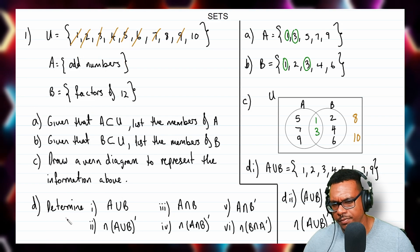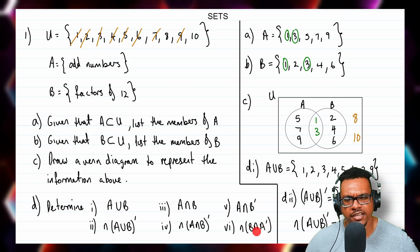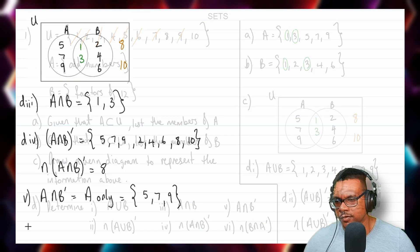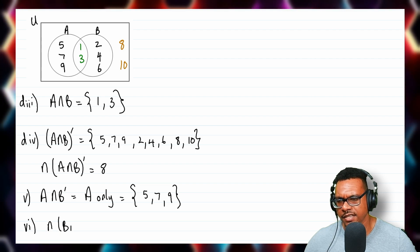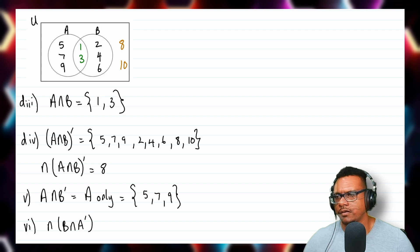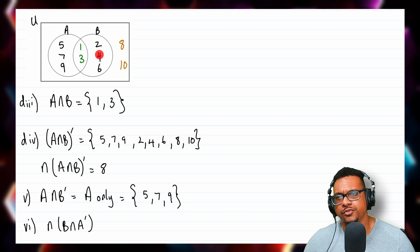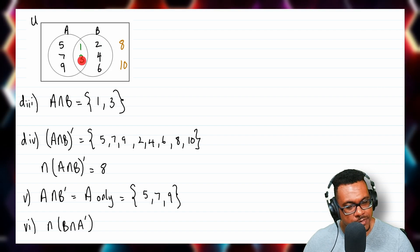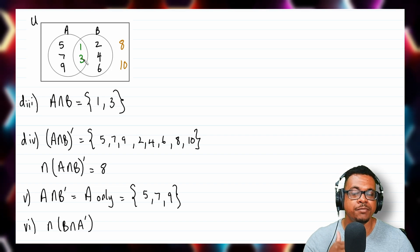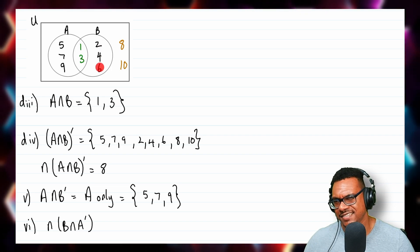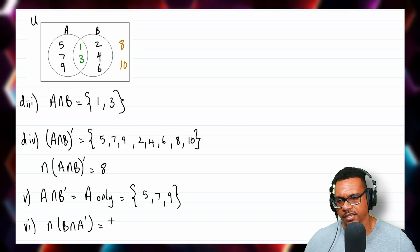For D part 6, we want the number of elements in B intersect A complement, which is B only. The elements of B only are 2, 4, and 6. Although 1 and 3 are members of B, they are also members of A, so B only excludes them. That gives us 3 elements in total.